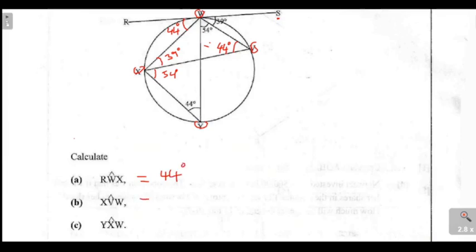Then we come to calculate XVW. Where is XVW? XVW. The angle at V there, again, is 44. You can check right there. We have a 44 degrees. So meaning, we write a 44 degrees right here.